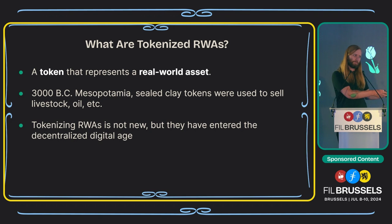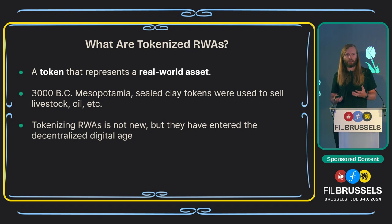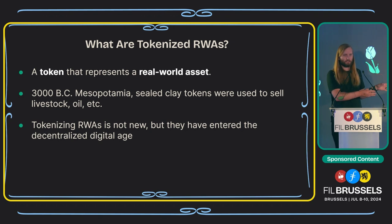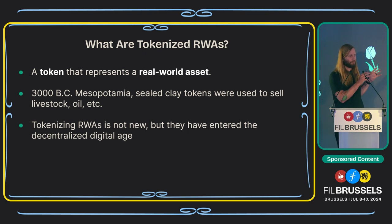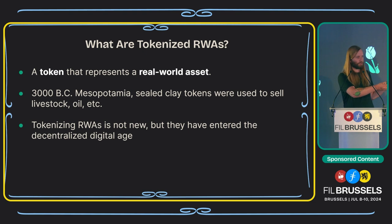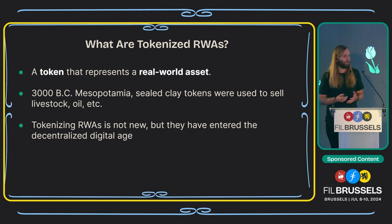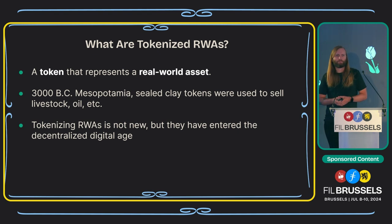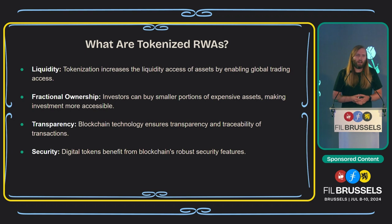As human beings in commerce, we have been creating tokenized RWAs for a long time, and that tradition has carried over through all the different means we've conducted business, including the modern digital age. You have bank ledgers that are privatized inside their architecture dictating what a tokenized asset is in the digital realm. We're now in a new era of taking those tokenized RWAs from the centralized digital age to the decentralized digital age — moving them from privatized computers and servers onto a ledger.